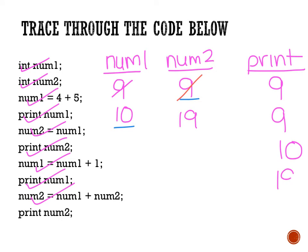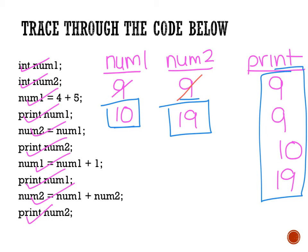I print number2 to the screen, giving 19. At the end, number1 equals 10, number2 equals 19, and the four numbers printed to the screen are 9, 9, 10, and 19. When you trace through code I expect to see all the variables and their changes, as well as any print statements. I don't want to just see the final values — I want to see all the actual changes taking place throughout the code and where the variables end up.